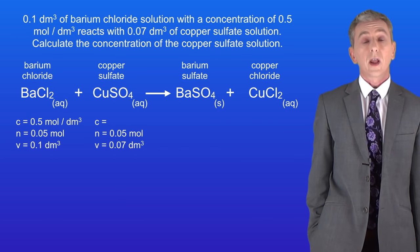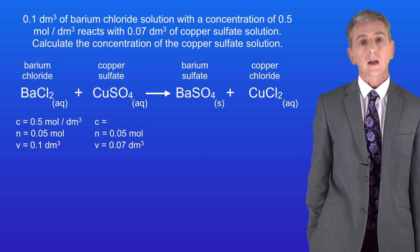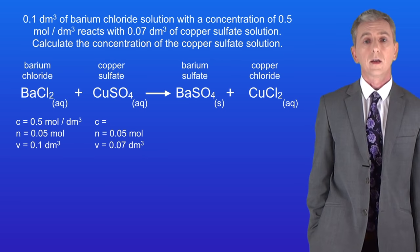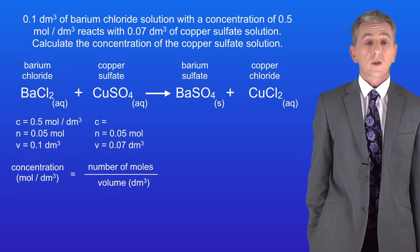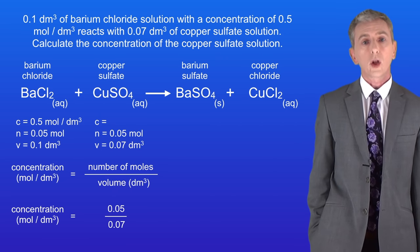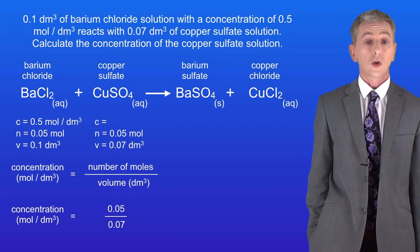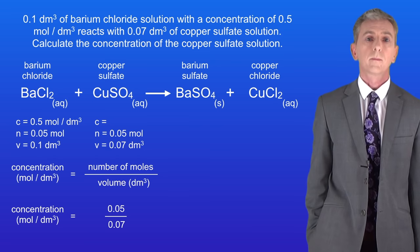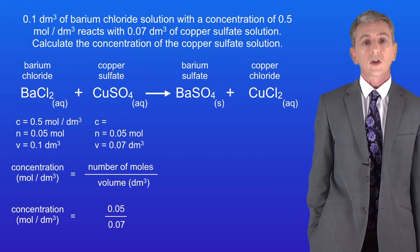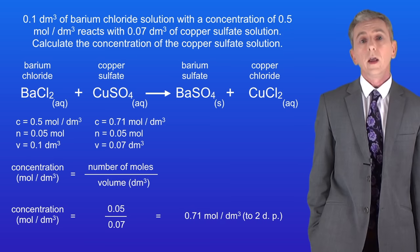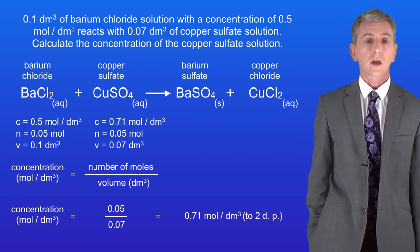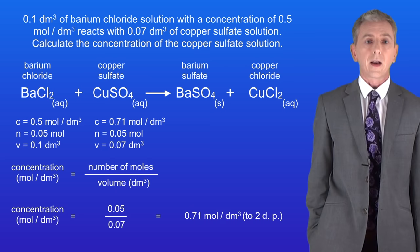Now we have all the information needed to calculate the concentration of the copper sulphate. The concentration is the number of moles divided by the volume: 0.05 moles divided by 0.07 decimetres cubed gives a concentration of 0.71 moles per decimetre cubed to two decimal places — and that's our final answer.